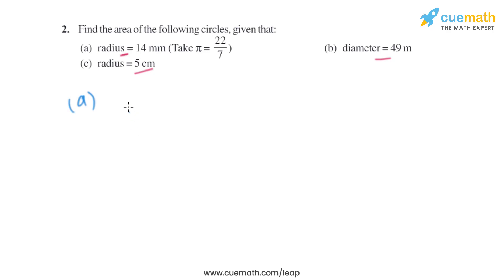Let's start with part a. We know that the formula to find the area of a circle is πr². π is given in the question as 22/7, and radius is 14 millimeters, so it will be 14². On solving this we will get the area of the circle as 616 square millimeters.